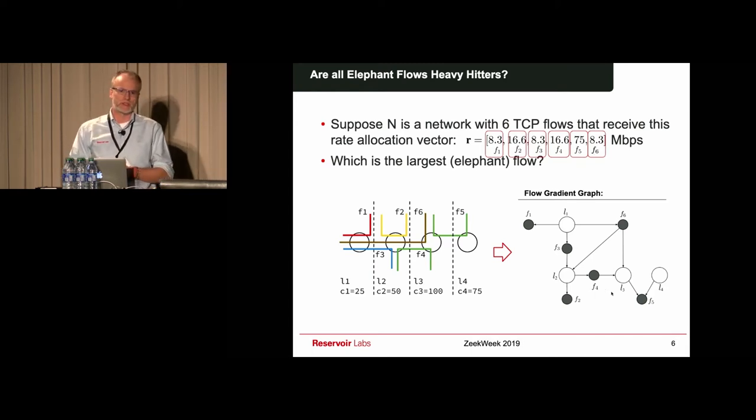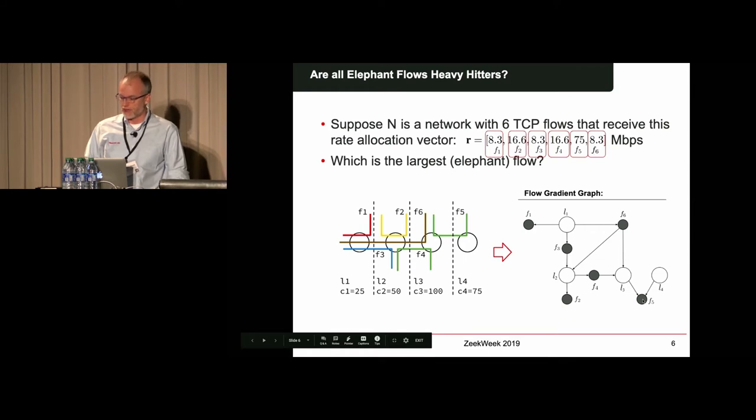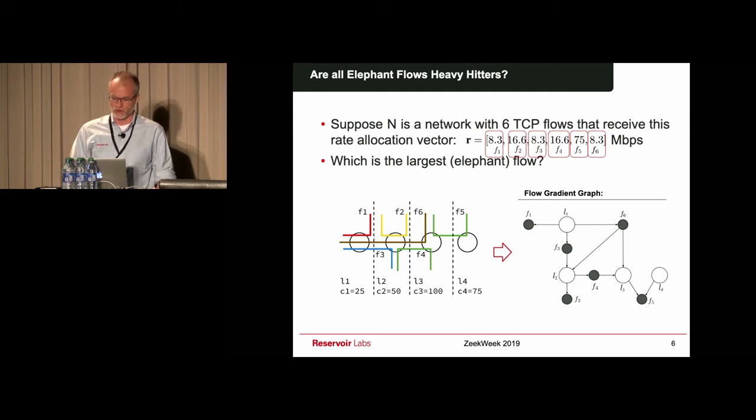The graph also allows us to actually quantify the impact. It tells us the ripple effects of perturbations that you might have on regions in the network. For instance, if you are somehow modifying the performance of link 2, this is going to trickle down to flow 4 and flow 2, but it's not going to affect the performance of flow 3 and flow 6.